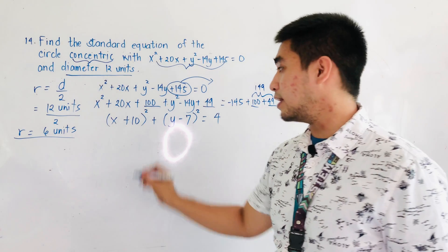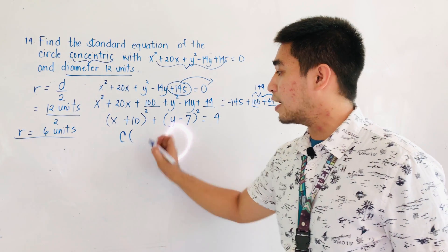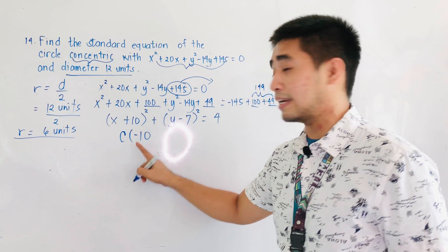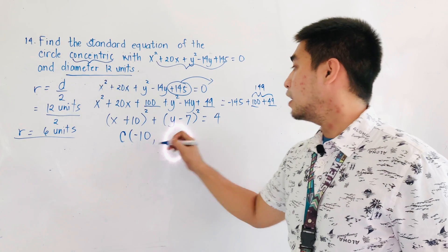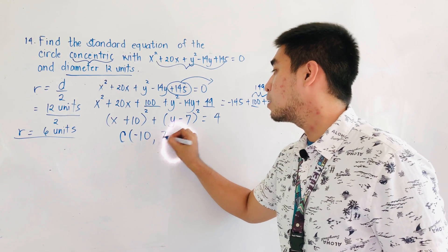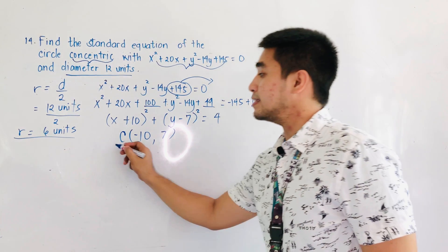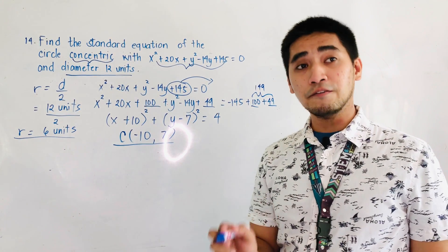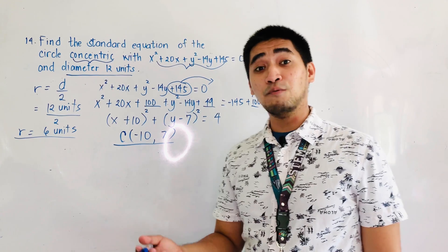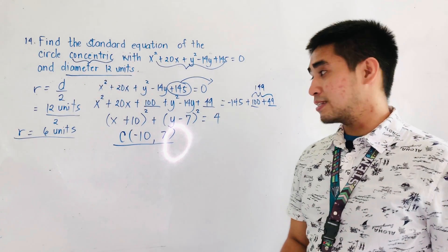Therefore, where is the center located? If this is positive 10, the center is located at negative 10. If this is negative 7, the center is located at positive 7. Therefore, this is the center we will be using in order to get the standard equation of the circle with radius 6 units.